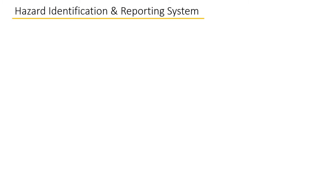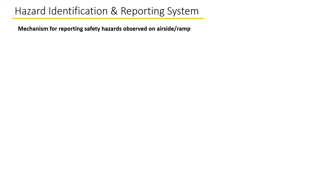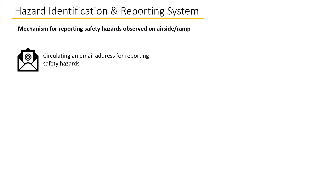It is necessary for all airports to have a hazard identification and reporting system, especially for airside operations that include the ramp. It is simply a system where a proper mechanism is developed for airside workers to identify and report safety hazards wherever observed and by whomever observed. It can be as simple as circulating an email address to all departments working on the airside, where a report may be forwarded for any identified safety hazard.